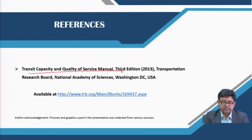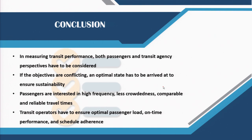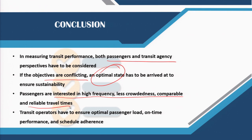The references are given here; the majority of materials have been adopted from the Transit Capacity and Quality of Service Manual, which can be freely downloaded. In conclusion, in this lecture we looked at measuring transit performance both from passengers' and transit agencies' points of view. If objectives are conflicting, an optimal state has to be arrived at without harming any one stakeholder. Passengers are always interested in high frequency, less crowdedness, and comparable and reliable travel times, whereas transit operators must ensure optimal passenger load, on-time performance, and schedule adherence to sustain their services.